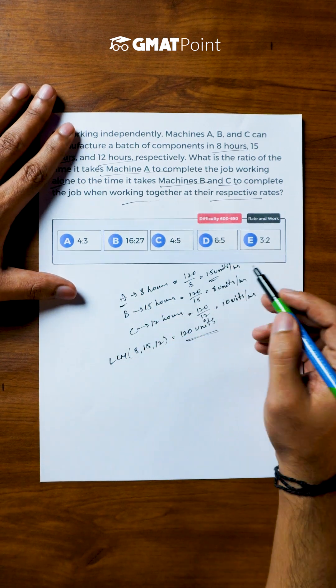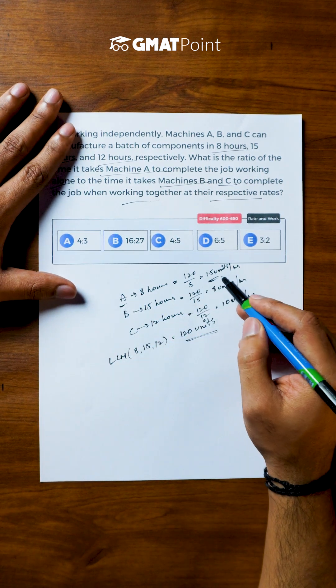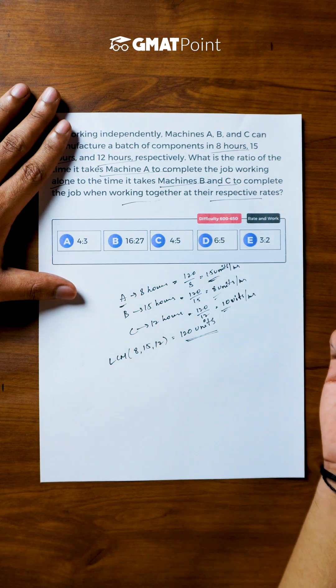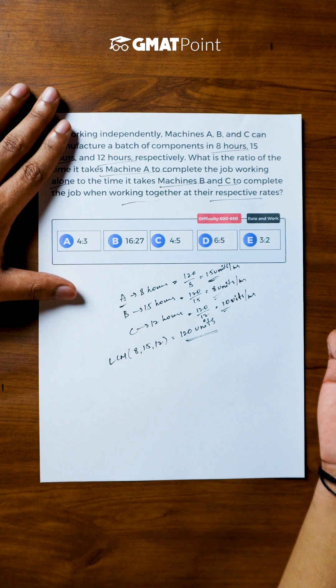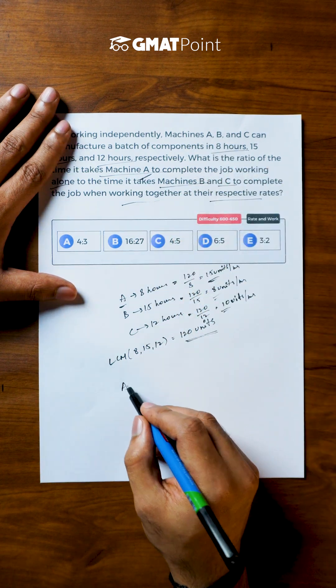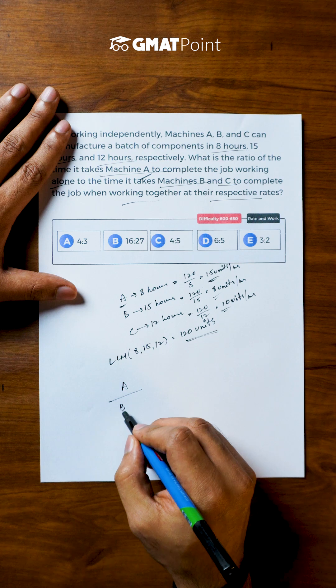So we now know that the work done by A per hour is 15 units, by B it is 8 units and by C it is 10 units. Now the question asks us to calculate the ratio of time taken by machine A alone divided by B plus C together.